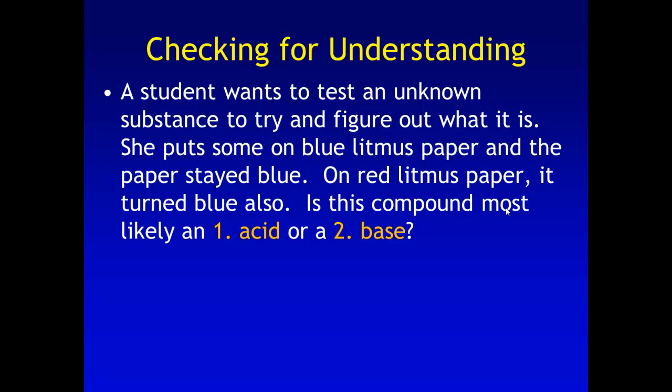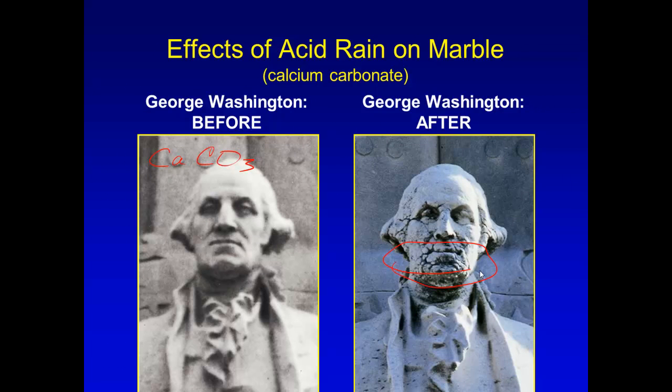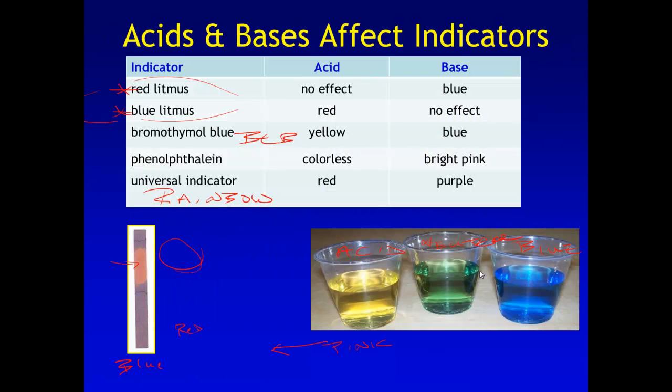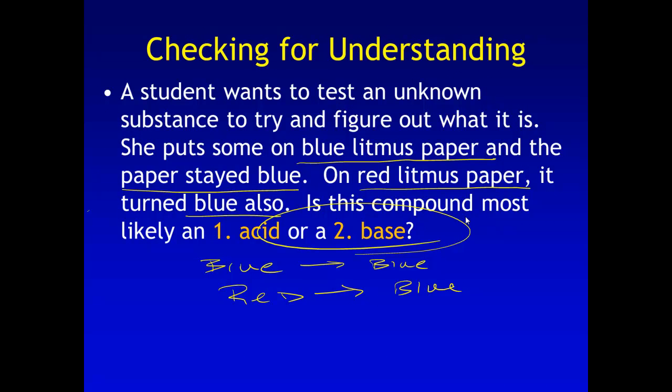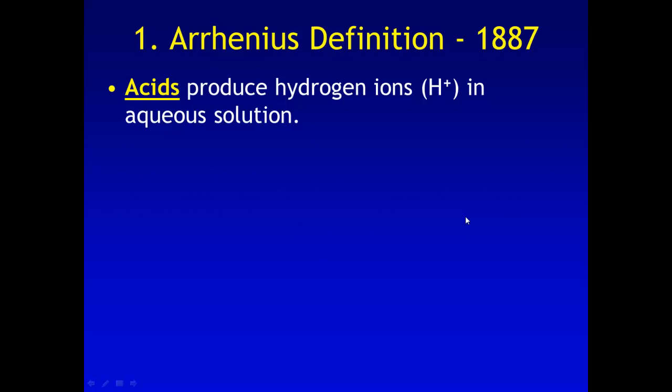A quick little check for understanding. A student wants to test an unknown substance and try and figure out what it is. So, she puts them on blue litmus paper and the paper stayed blue. On red litmus paper it turned blue also. Is this compound most likely an acid or a base? So on blue litmus paper it stayed blue and on red litmus paper it turned blue. So if we go back and look at our chart, on blue litmus paper it had no effect and on red litmus paper it turned blue so that tells me that my compound should be a base.